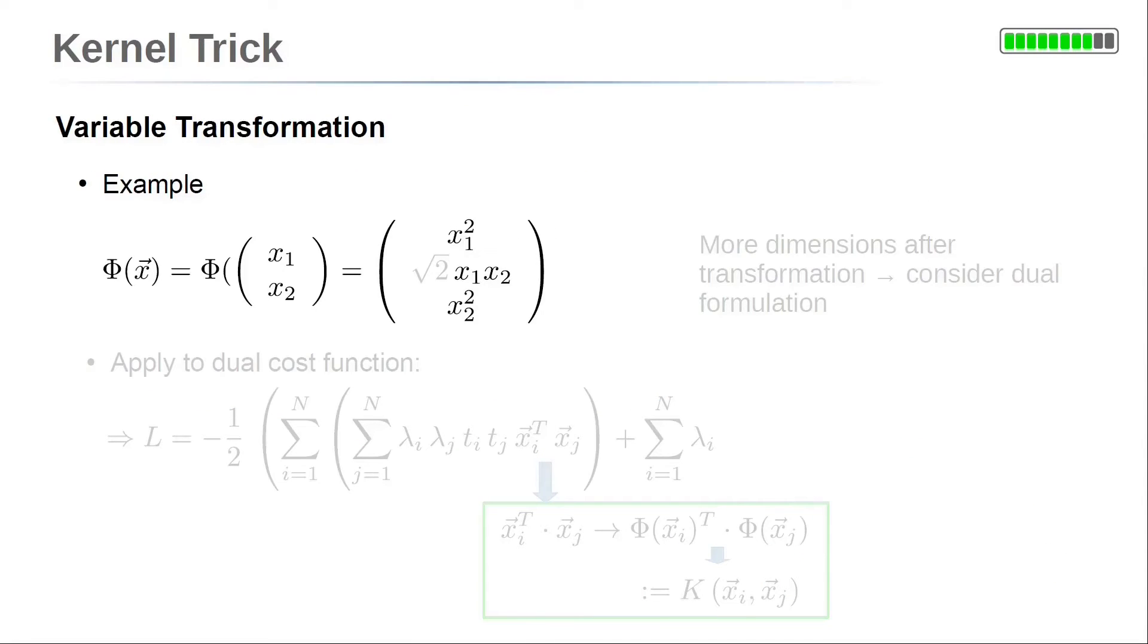So, let's consider a concrete example. We have two dimensions with input variables x1 and x2. We want to perform a variable transformation to all possible second order terms. These are x1 squared, x2 squared and x1 times x2. Here, we put a factor of square root of 2 in front of the term x1 times x2. This is for convenience, as we will see later. If we want to take these three transformed variables in addition to our original two variables into account, we have in total five variables. Variable transformations can produce a lot of extra dimensions. This is why the dual formulation with the Lagrangian cost function is so useful. For this cost function, the computational effort is independent of the number of dimensions considered.